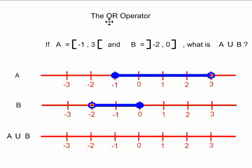Because any number that is in the first set or the second set will be in the answer. Set A is from negative one included to three not included and is illustrated here. Set B is from negative two not included to zero included and is illustrated here.